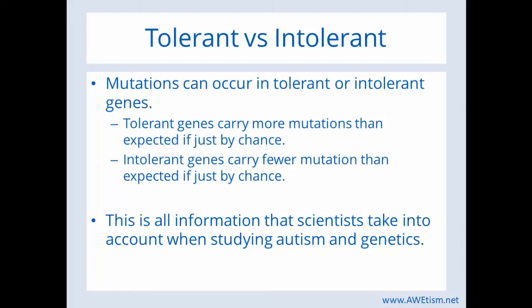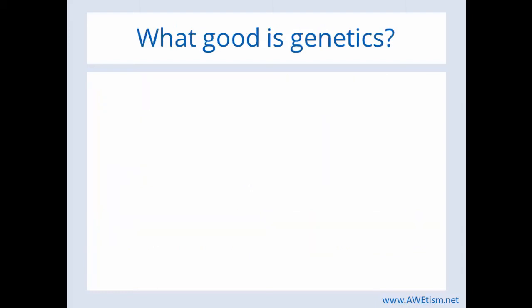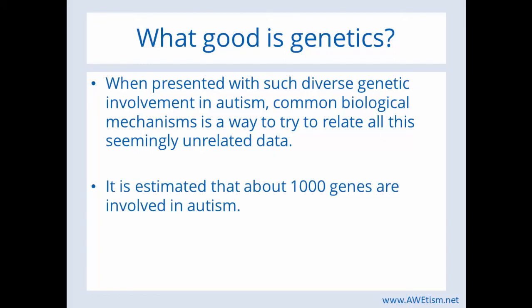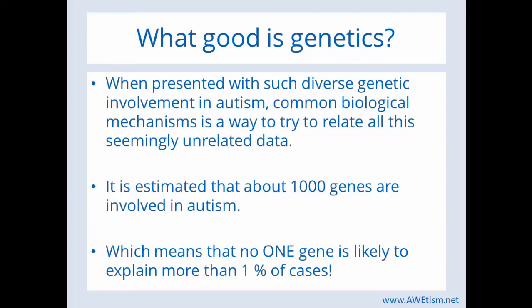There's so much more important information to know about a specific mutation. You might be thinking: what good is genetics? There are all different kinds of mutations, intolerant genes, tolerant genes, missense mutations — a variety of things. When presented with such diverse genetic involvement as there is in autism, common biological mechanisms are a way to try to relate all this seemingly unrelated data. To remind you of some facts from the last video: it's estimated that about 1,000 genes are involved in autism, meaning no one gene is likely to explain more than 1% of cases. In the next video, I'll go into more about those specific genes and common biological mechanisms.